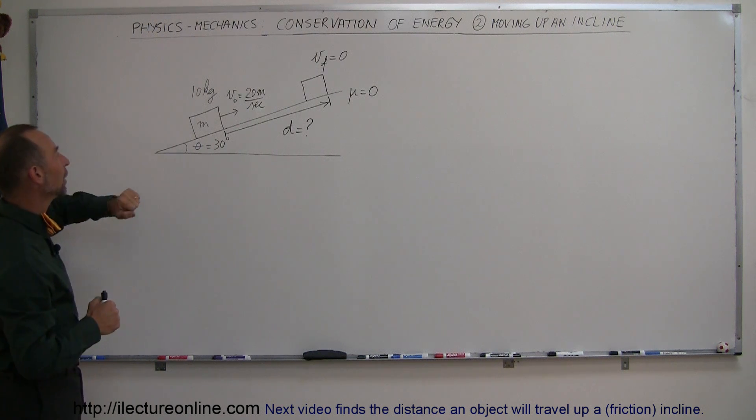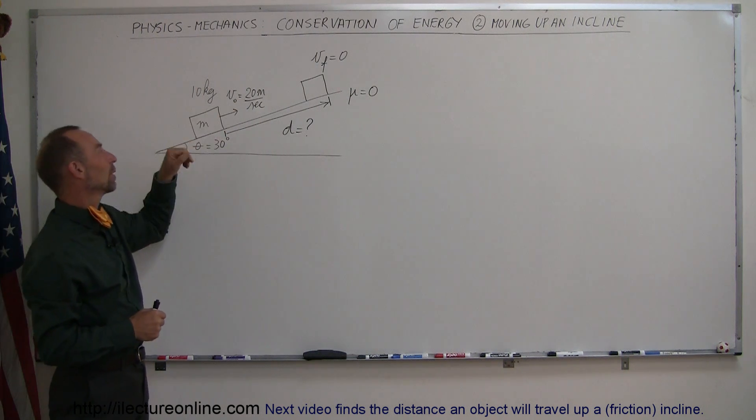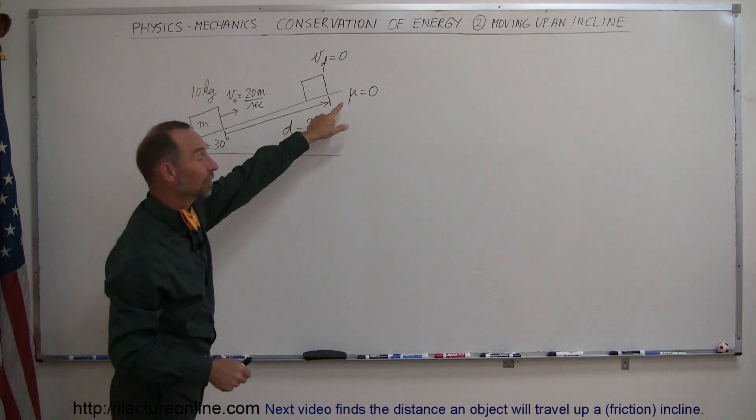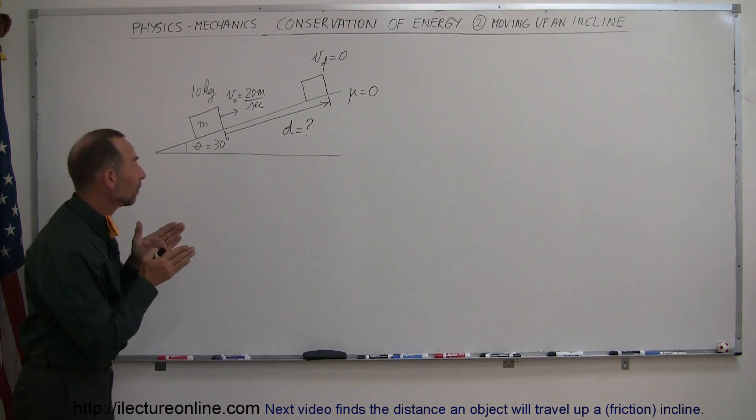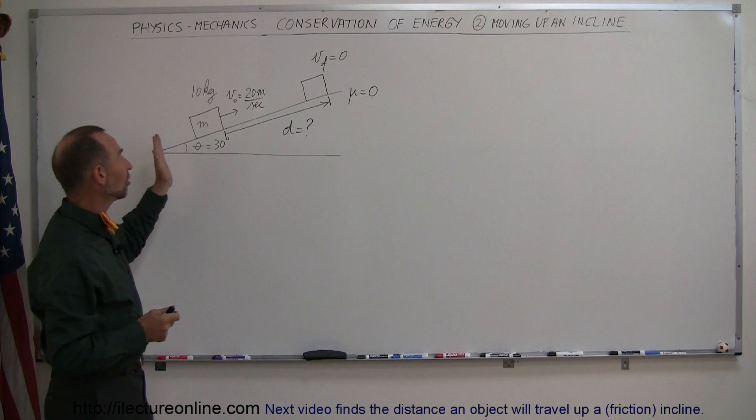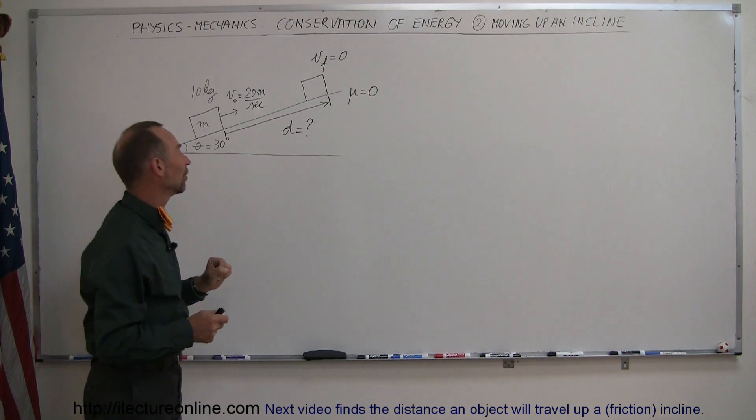We have an object sitting on an inclined plane. It's given an initial speed of 20 meters per second, there's no friction between the surface and the block, and eventually the block will come to a stop with a final velocity of zero.